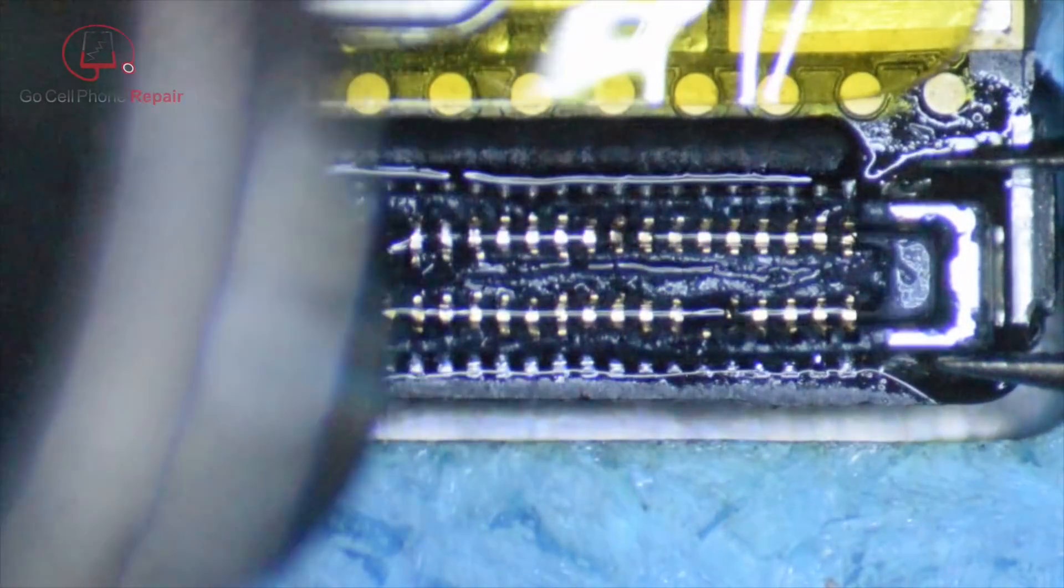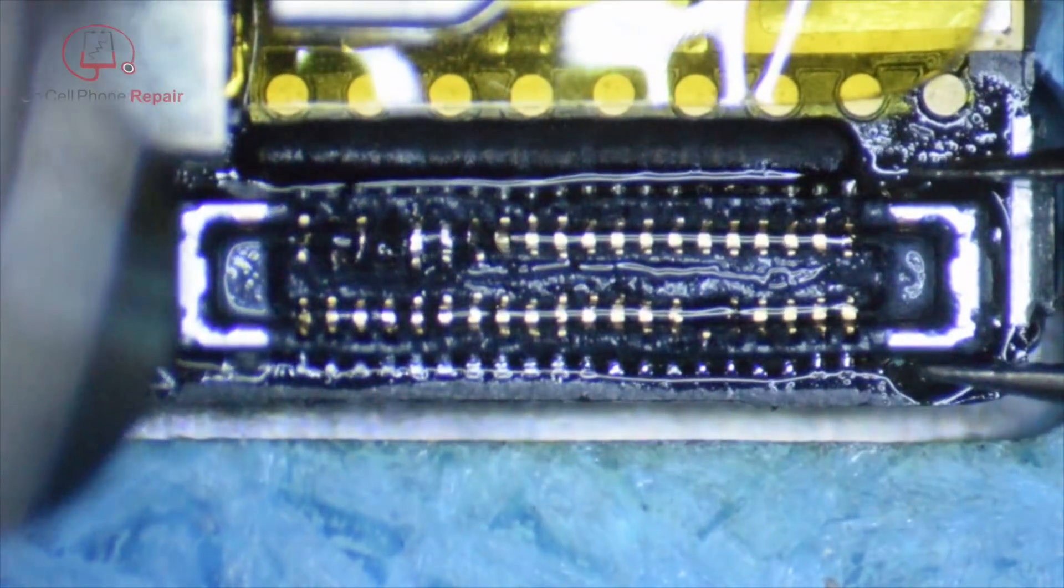We're just waiting to see the solder turn silver, and when it does, we'll start feeling around on the connector. Once it starts to move freely on both ends, we can go ahead and just slide it off towards the bottom.